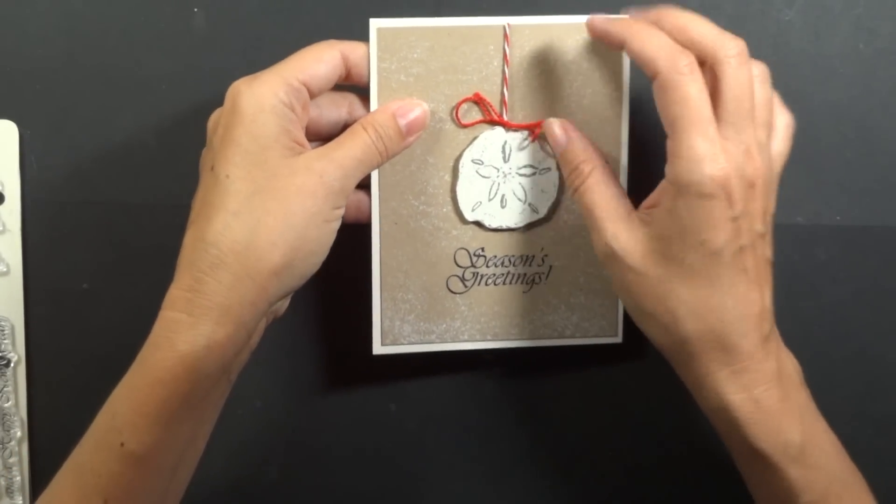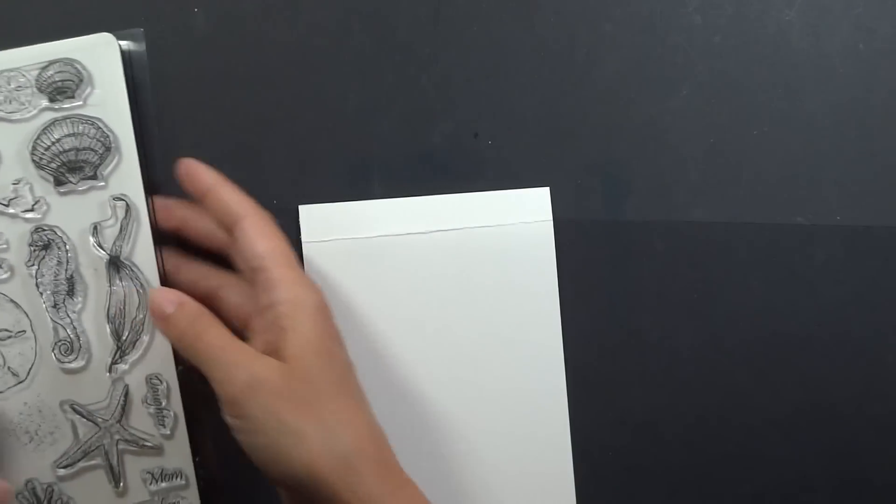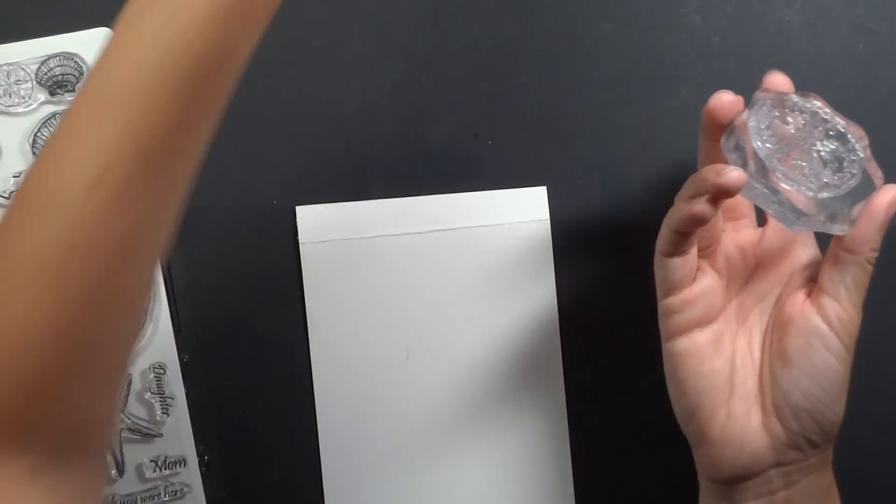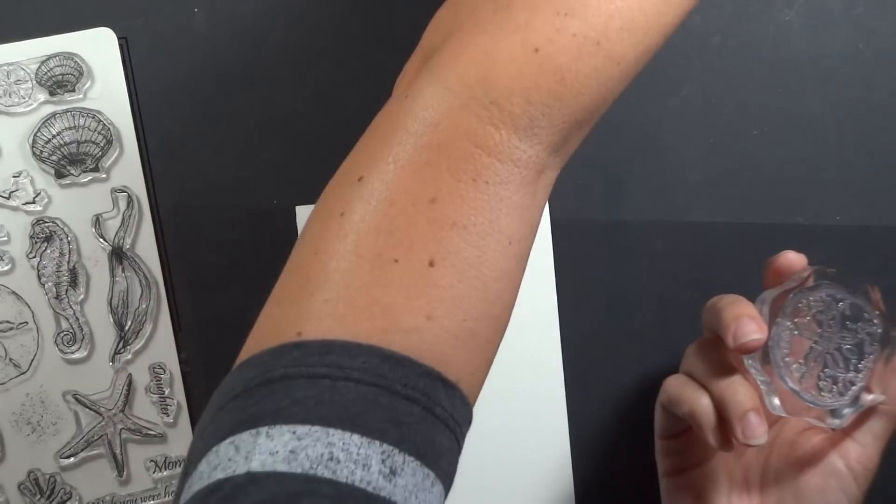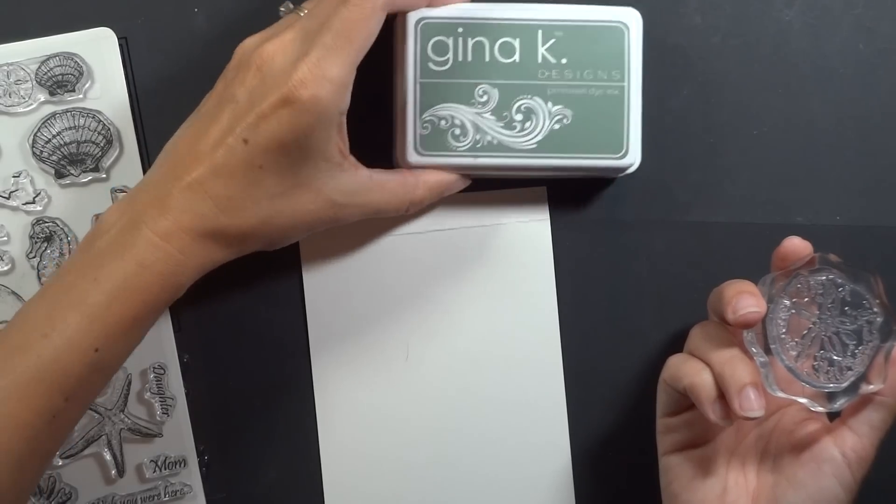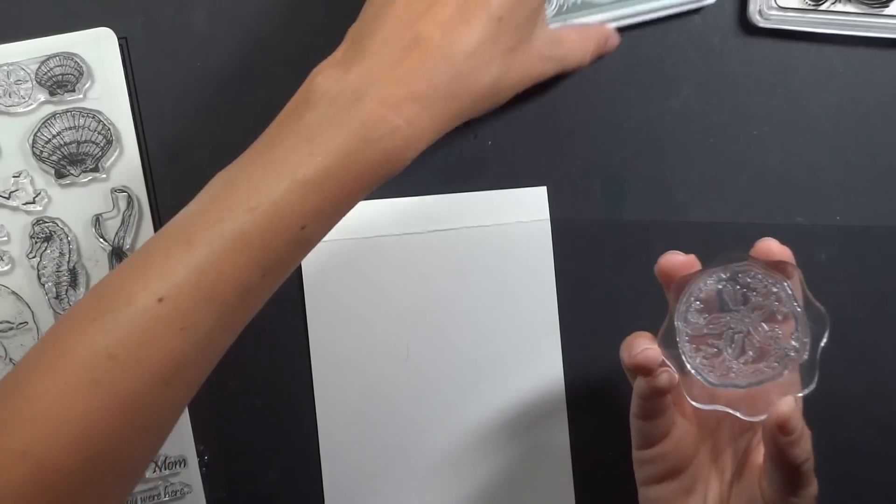So this next one I am going to stamp out the sand dollar from my Gifts from the Sea set so I've got a small block for that one and I'm going to use on this card the Moonlit Fog, the Gina K Designs Moonlit Fog and then some of the white pigment ink and then just the black for the greeting.